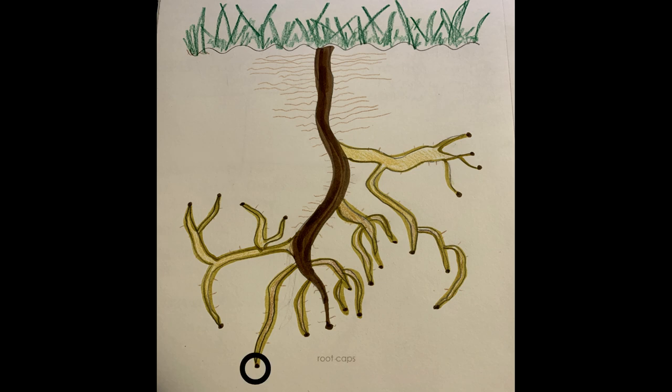Root caps are groups of tiny cells that grow at the tips of roots. They are rounded in shape at the ends and help to protect the root tip from the roughness of the soil as roots grow in search of water.